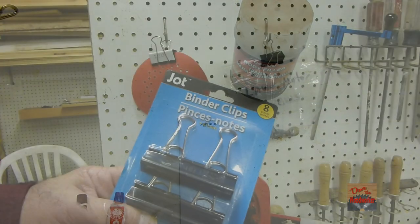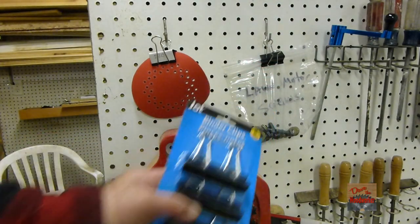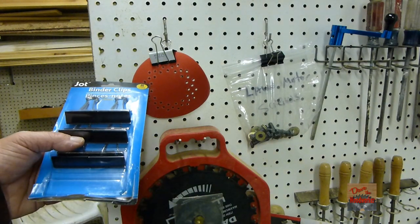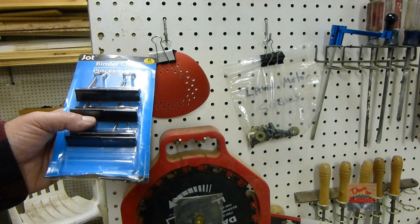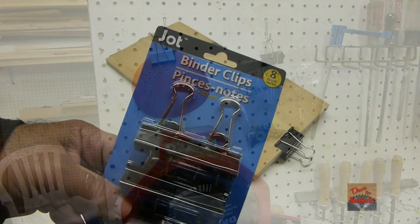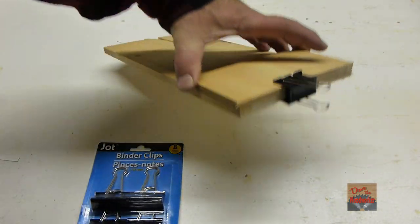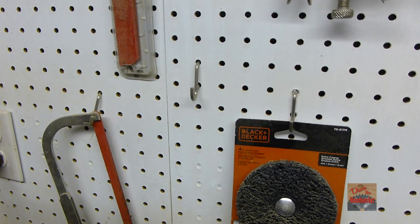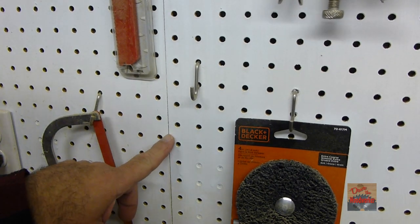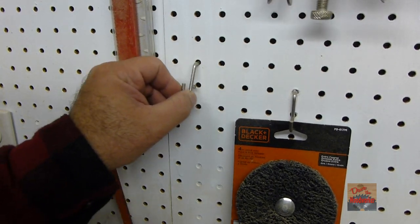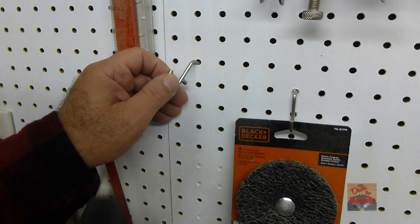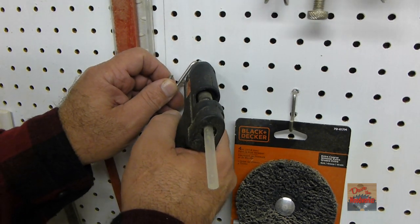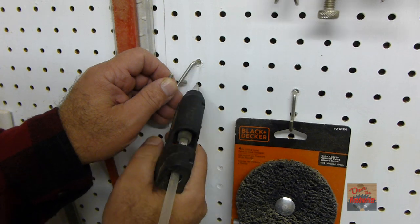Use binder clips to hang plastic bags on the pegboard for your sandpaper. Put a label on them for what grit it is. Binder clips also make good little clamps for thin wood. If you've got a pegboard in your shop and the hooks are loose, put some hot glue to keep them in place.